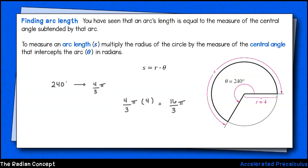That will be 4 thirds π times 4, which is 16 thirds π. If we happen to find that the radius is measured in inches, we would just add those units of inches to the end of our answer.